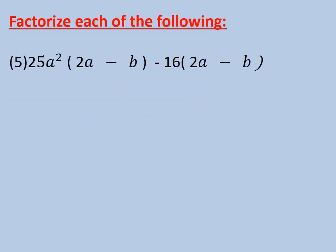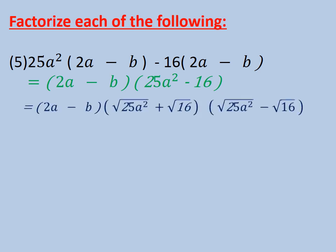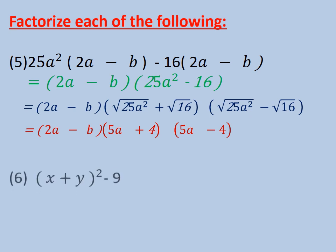Number 5: We want to factorize this expression. We can see that the bracket (2a - b) is a common factor. Then we will factorize the expression 25a² minus 16, which gives us (2a - b)(5a + 4)(5a - 4). Number 6: (x + y)² minus 9.